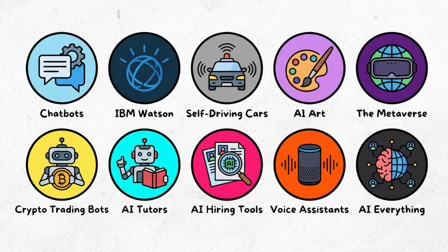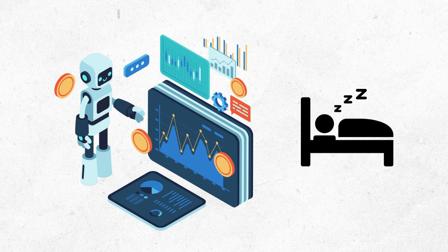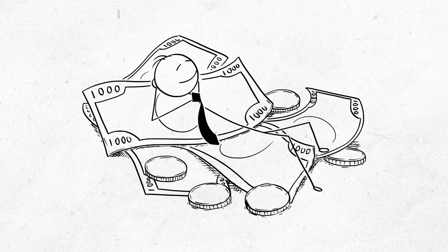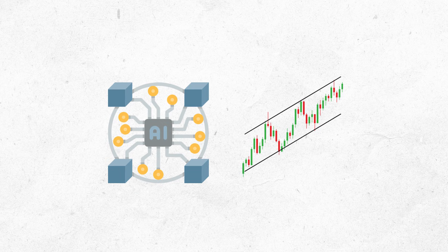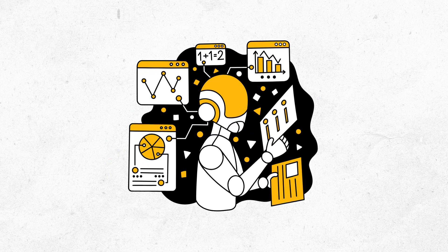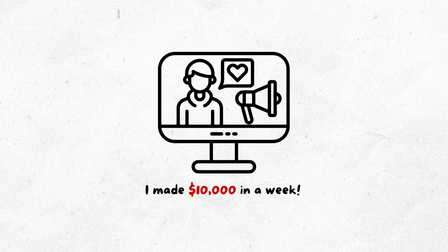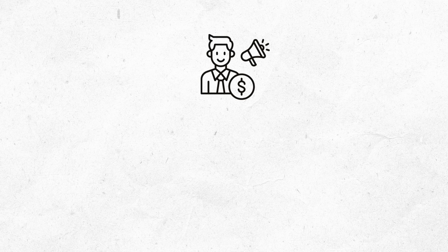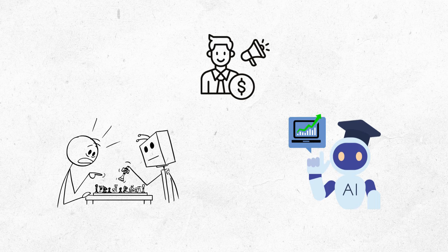AI crypto trading bots. The get rich quick scam. AI bots that trade crypto while you sleep. Wake up rich. That was the promise. Advanced algorithms that predict market movements. Machine learning smarter than humans. Thousands bought them. Influencers promoted them. I made $10,000 in a week. The pitch. If AI can beat humans at chess, obviously it can beat the crypto market.